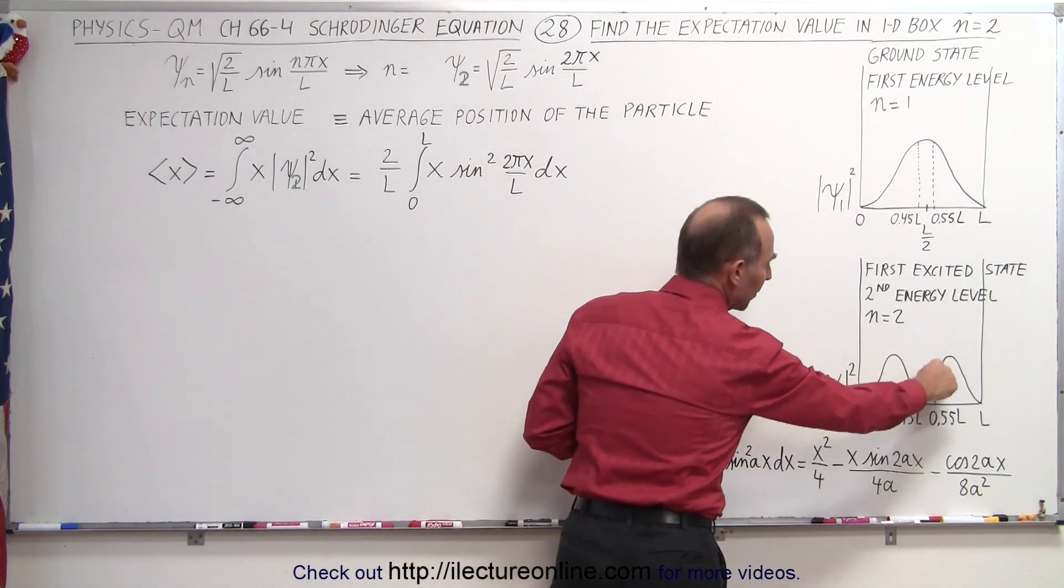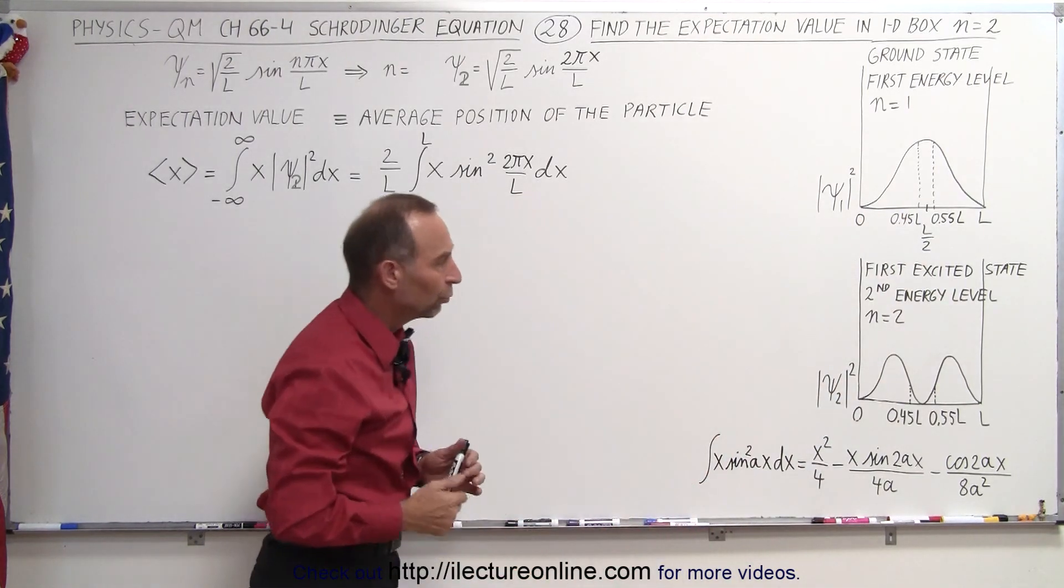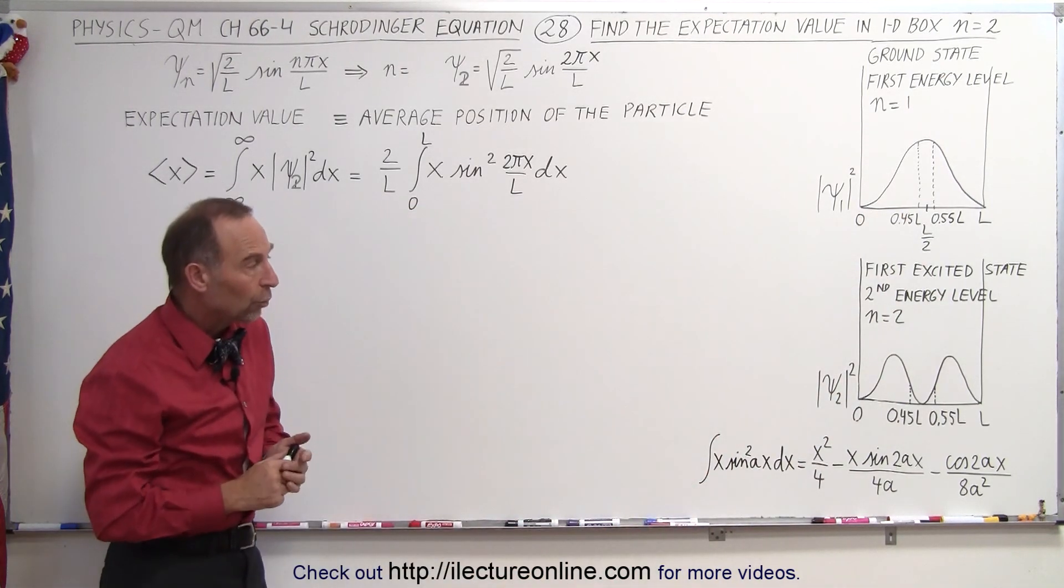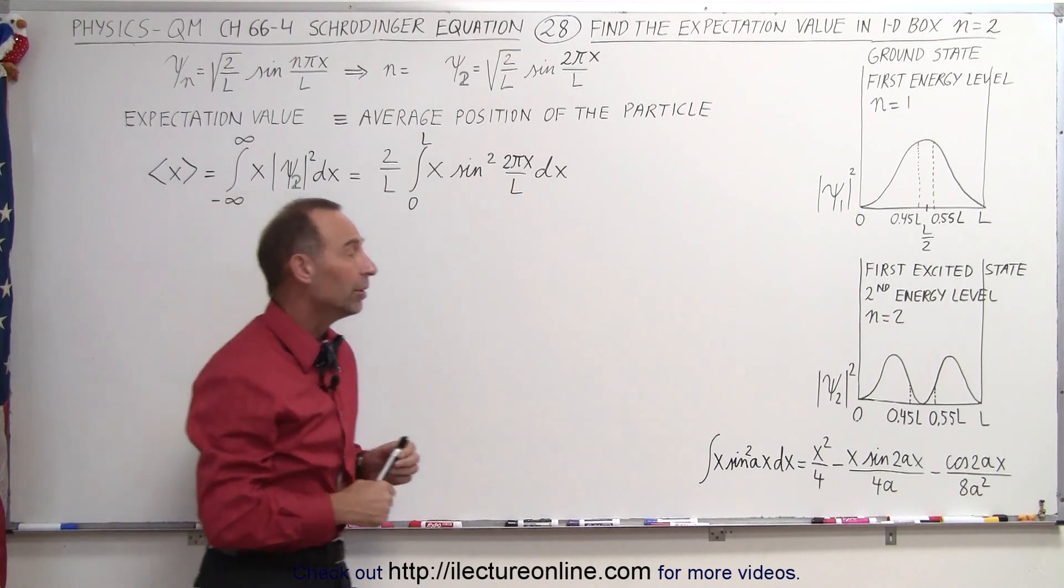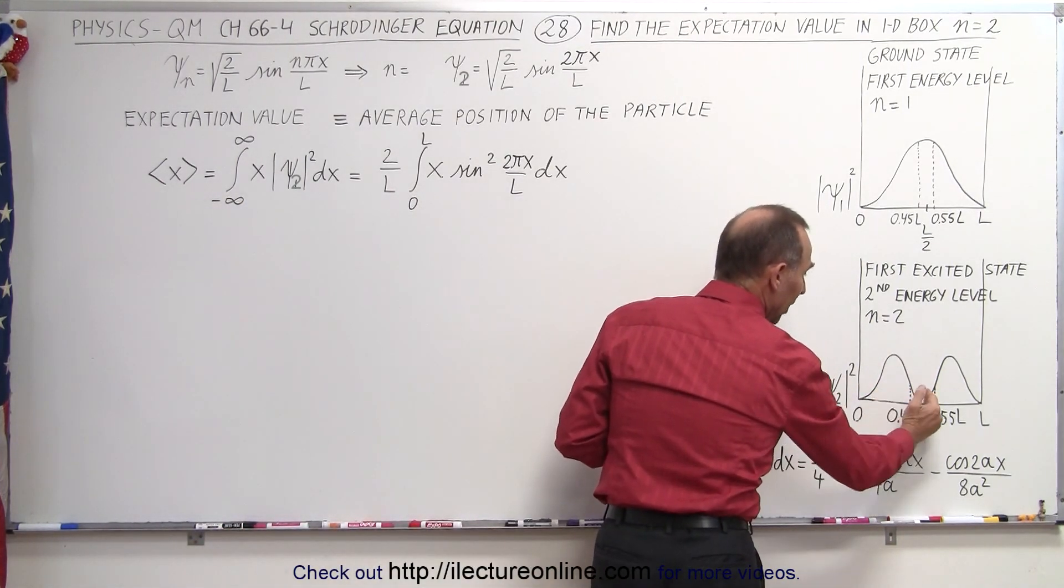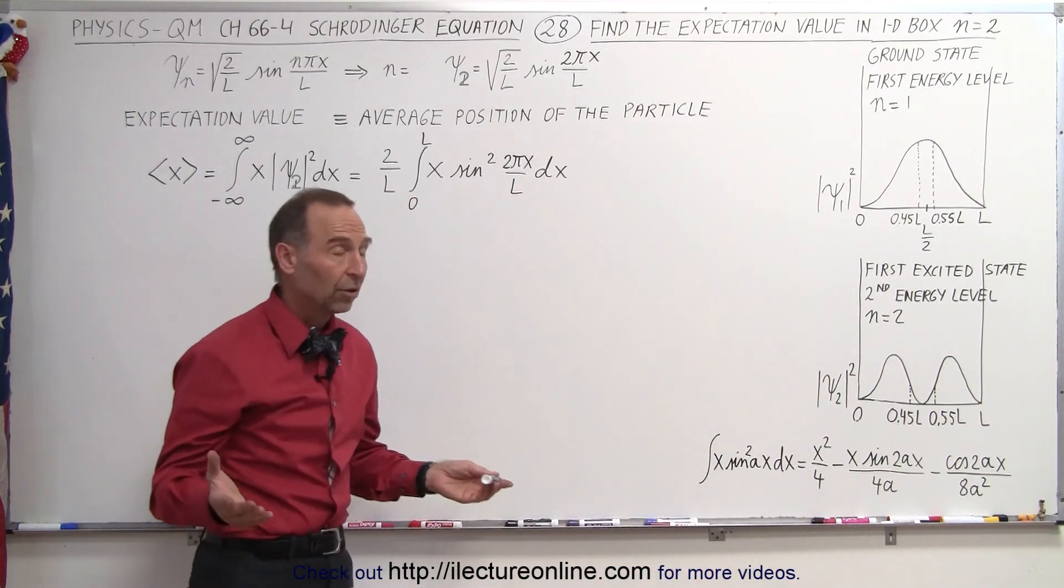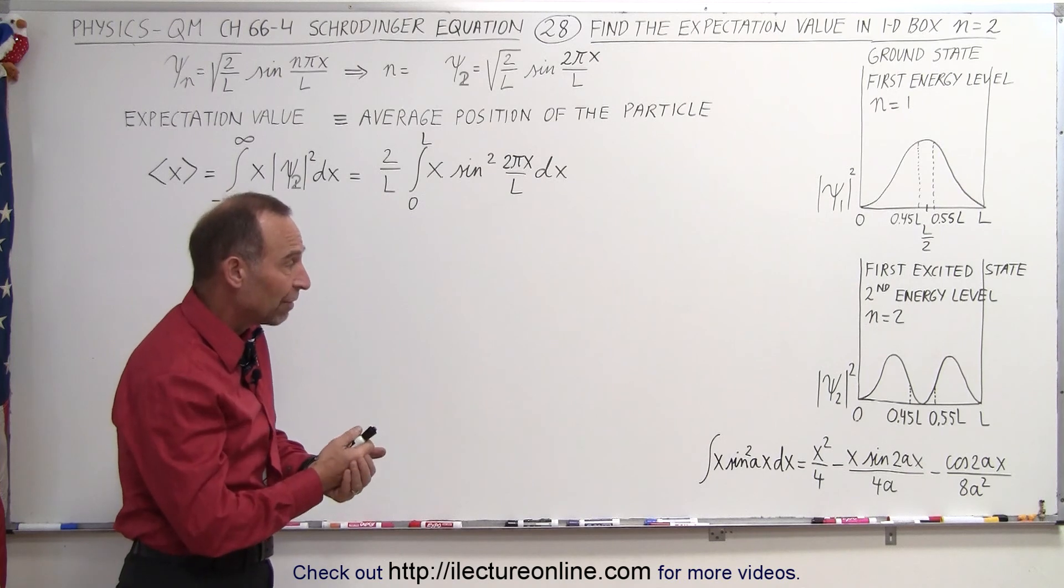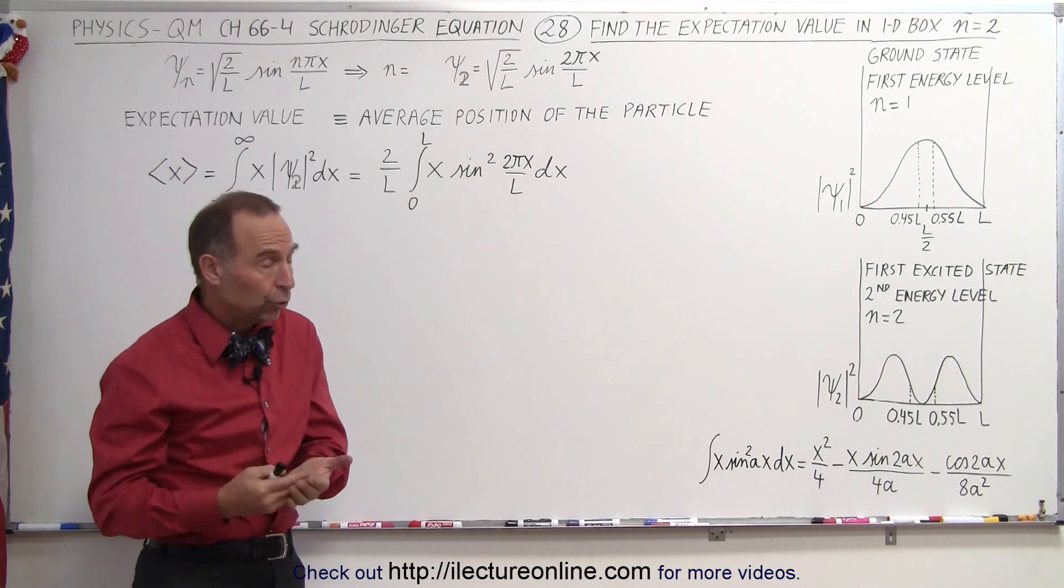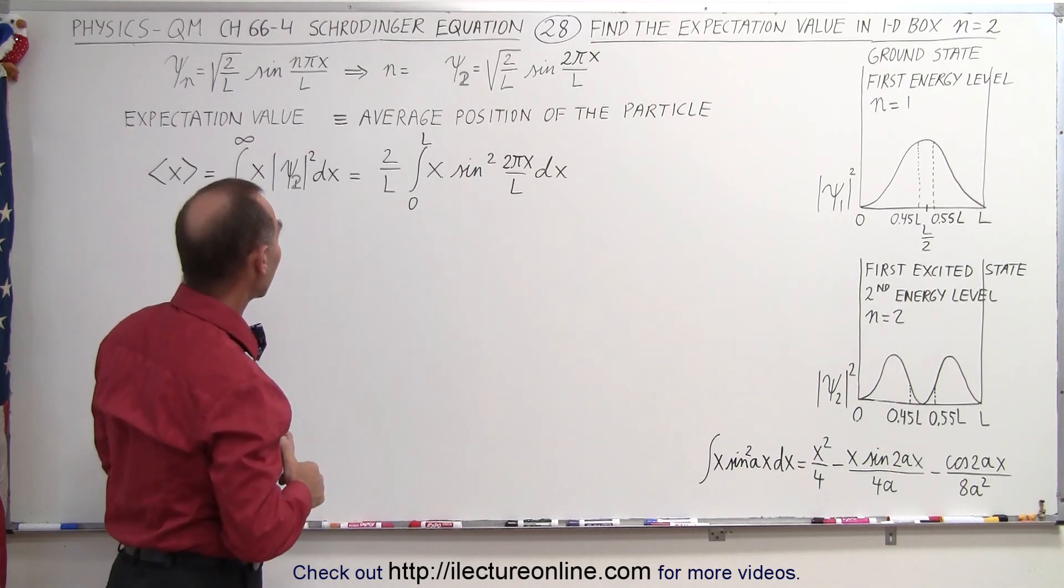You can see now that the probability density function looks quite different than it does when n equals 1, but we do also notice that the symmetry is still there—the curve looks exactly the same on the left side of the box as it does on the right side. So I would expect that the result for the expectation value would again be l over 2, like we saw in the previous video. Well, we're going to work it out and see if that's what we get.